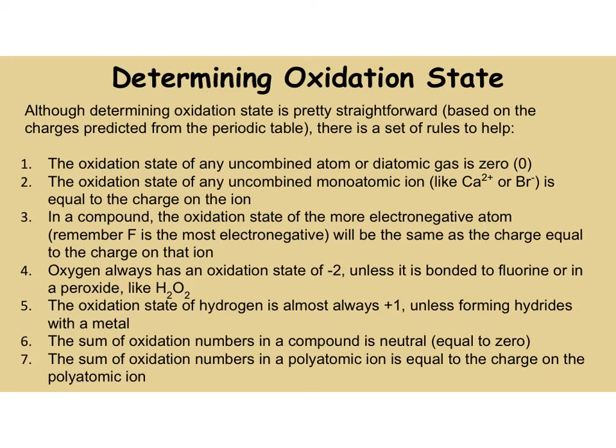The second rule says the oxidation state of any uncombined monoatomic ion — so if I give you Ca²⁺ or Br⁻ — that's going to be equal to the charge on that ion. I've already told you the charge, therefore that's the oxidation state.